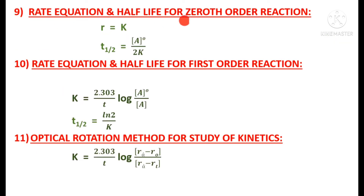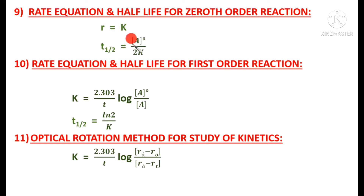For the zeroth order reaction, the rate equation is R = k. The half-life formula is: t½ = [A]₀ / 2k, where [A]₀ is the initial concentration of A.